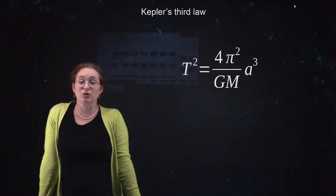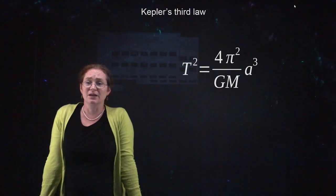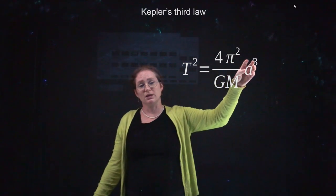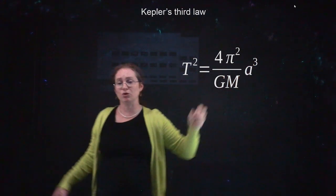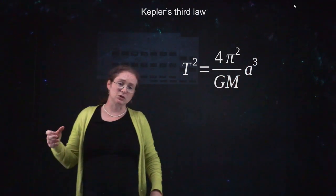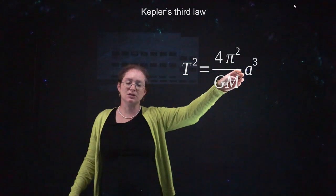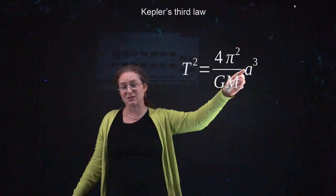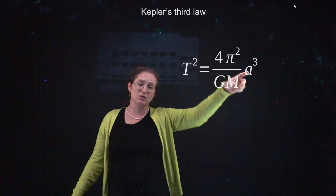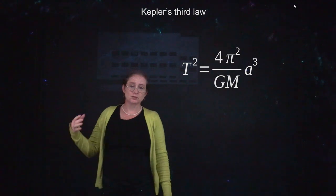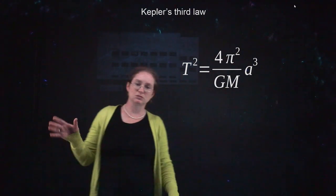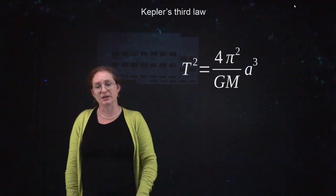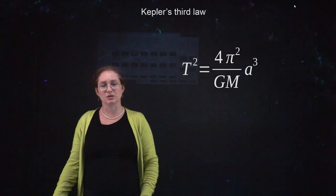Kepler's third law says that the period squared is proportional to the semi-major axis cubed. For an ellipse this is the major axis; for a circular orbit this is the radius of the orbit. This is a little trickier to derive, but it comes in handy for some of the problems in the book.